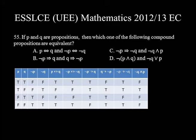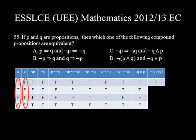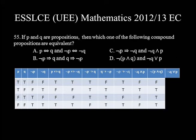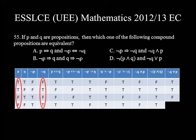Choice D: ¬(P ∧ Q) and ¬Q ∨ P. ¬(P ∧ Q) — negation of conjunction: T∧T=T, negated is F; T∧F=F, negated is T; F∧T=F, negated is T; F∧F=F, negated is T. ¬Q ∨ P (fourth column or first column): F∨T=T, T∨T=T, F∨F=F, T∨F=T. These are not equivalent because their values differ at row 1 and row 3. Therefore, the correct answer is choice A.